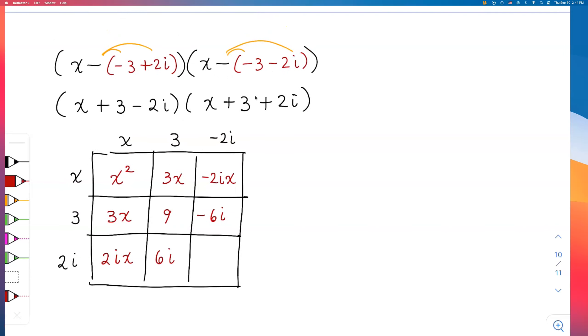Take a look, I must now do -2i times positive 2i. That is -4i². We know that i² is -1. Therefore, that turns into positive 4.